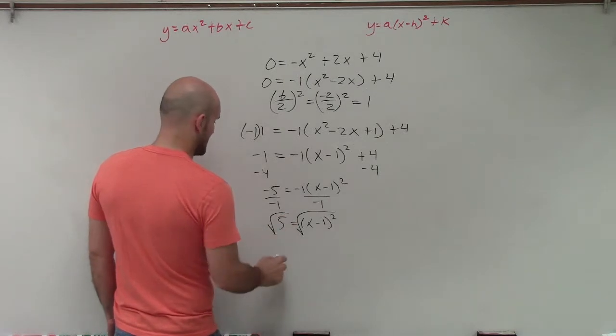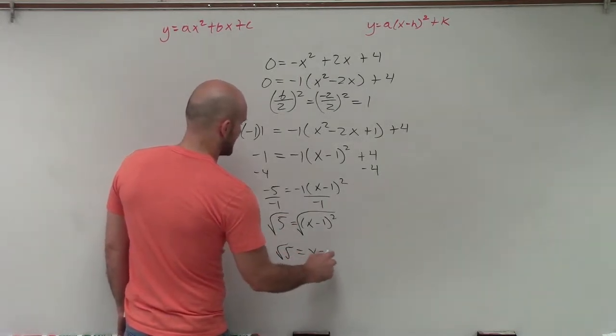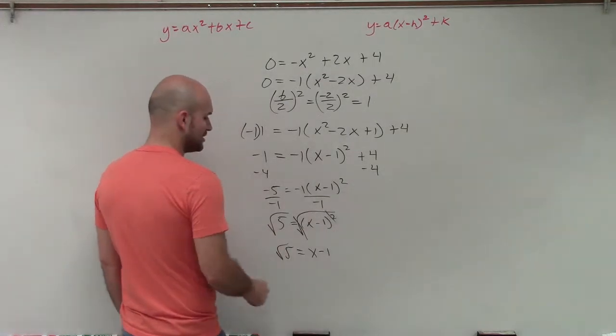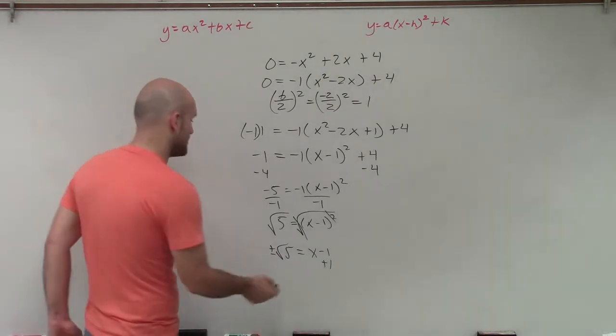And I'll take the square root of both sides. So therefore, I have the square root of 5 equals x minus 1. And those undo each other. Then I'll add 1. And remember, we take the square root, it's going to be plus or minus. Always got to make sure you remember that.